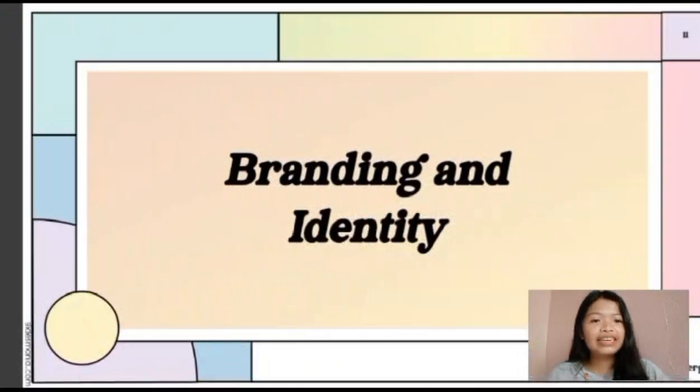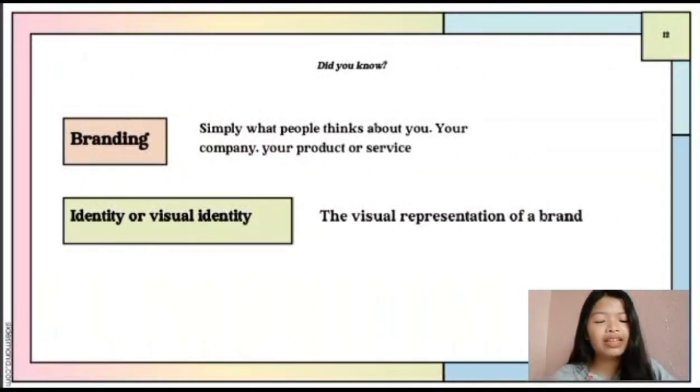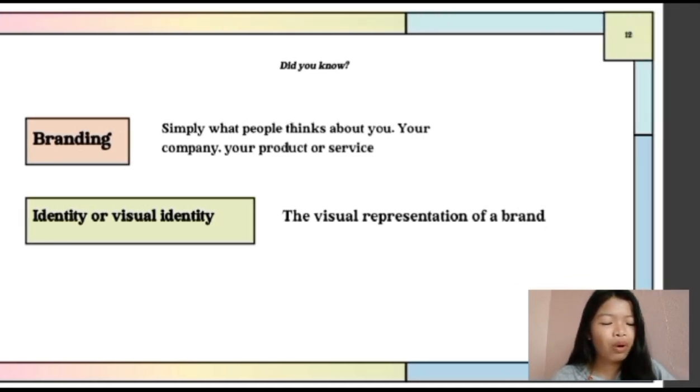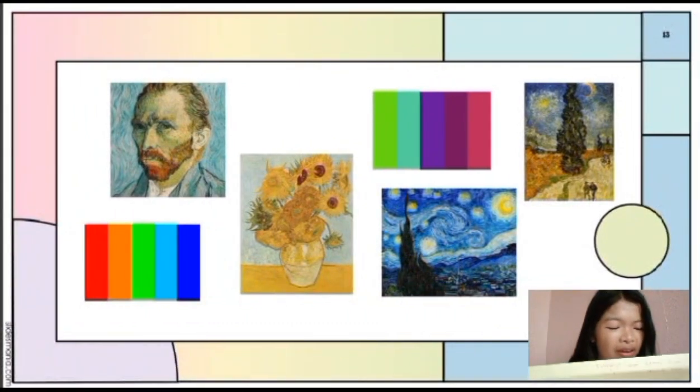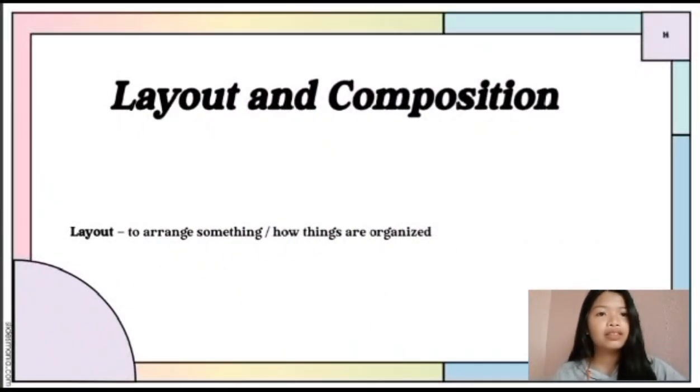Moving to branding and identity. What is branding? This is simply what people think about you, your company, your product, and your service. What about identity or visual identity? It is a visual representation of a brand. It can be in a form of image, choice of color, typography, and many more.